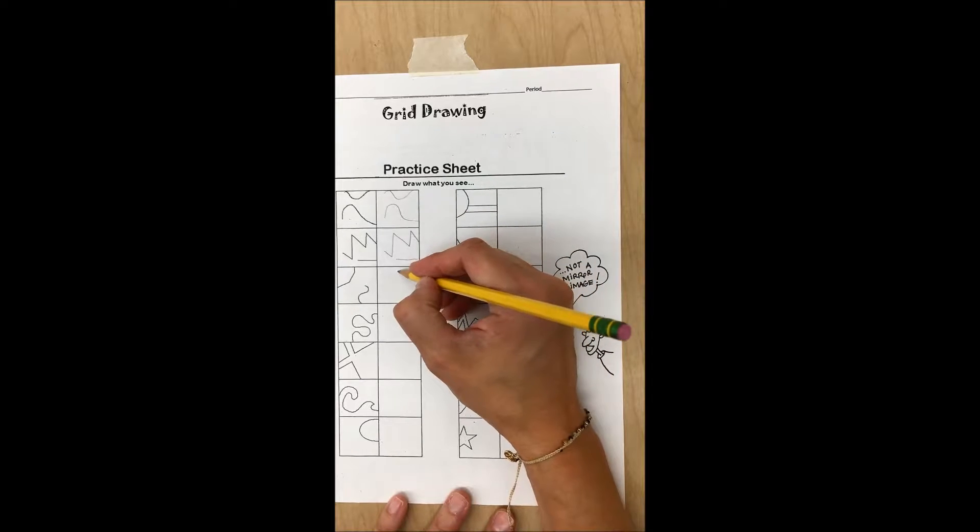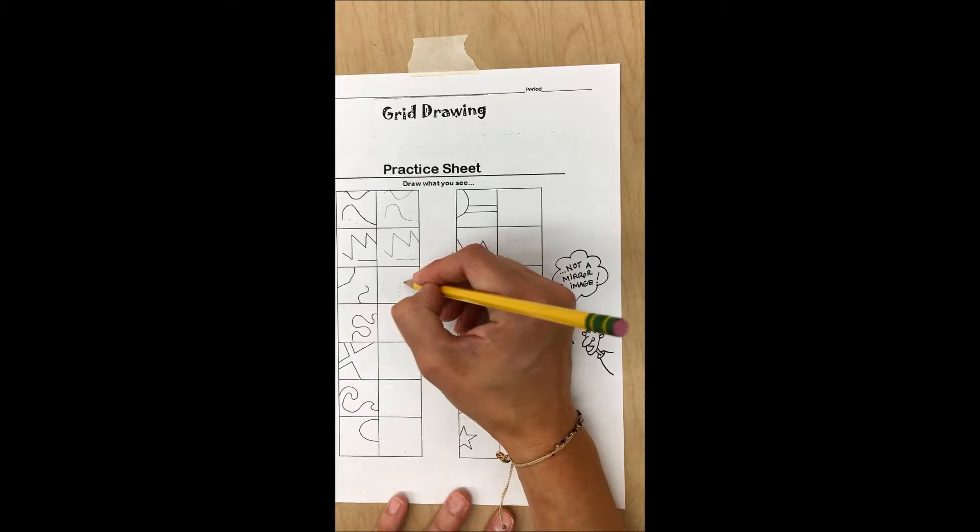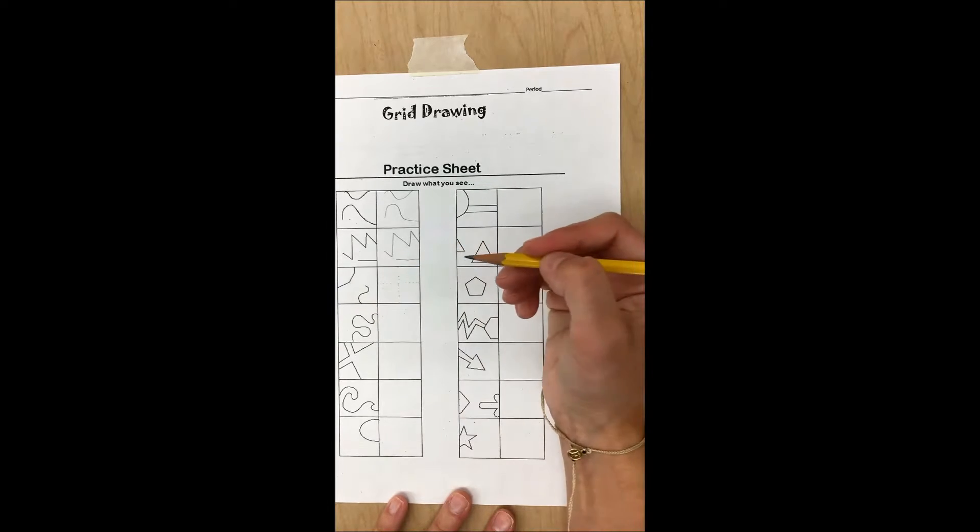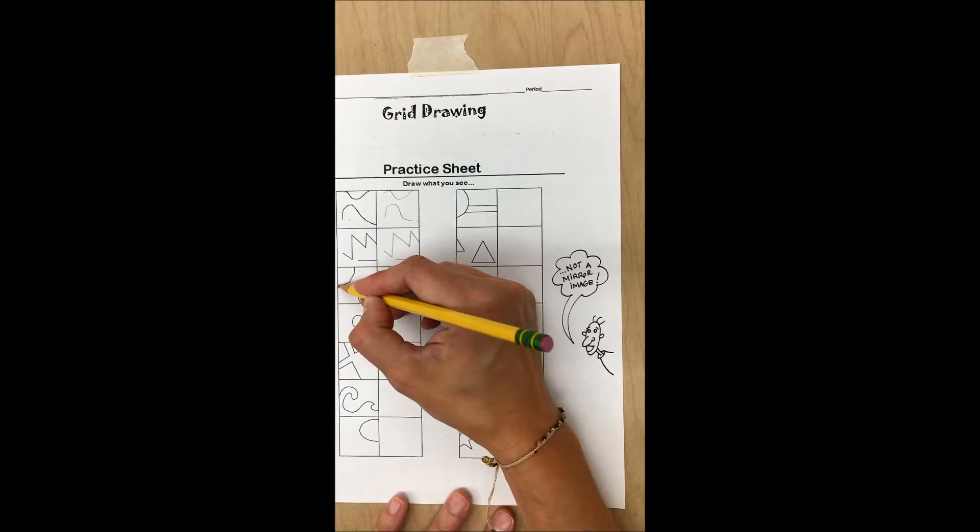Sometimes it helps to visualize the box being separated into four smaller boxes. Does the line start halfway up the box?